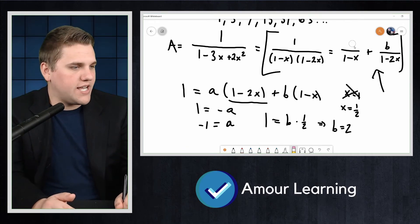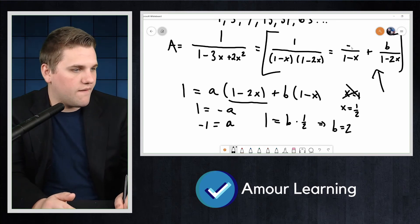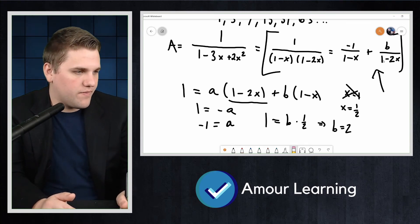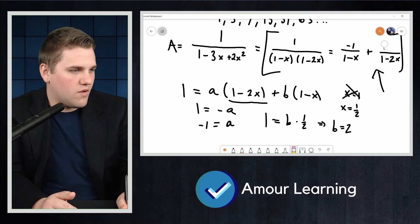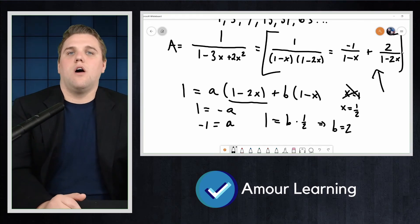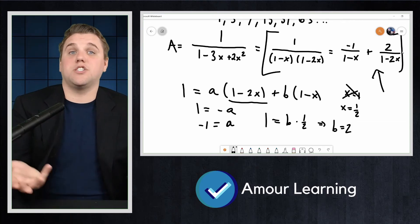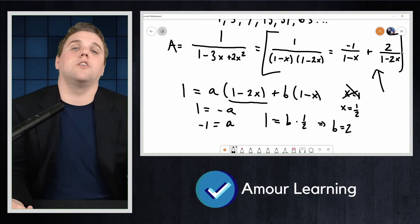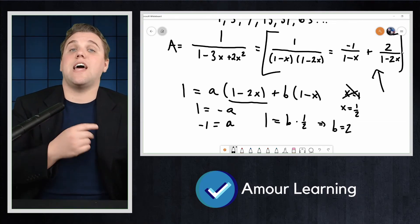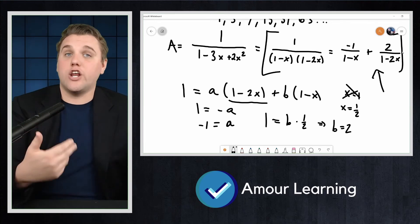This tells us we can decompose the original fraction by replacing A with −1 and B with 2, completing the partial fraction decomposition.